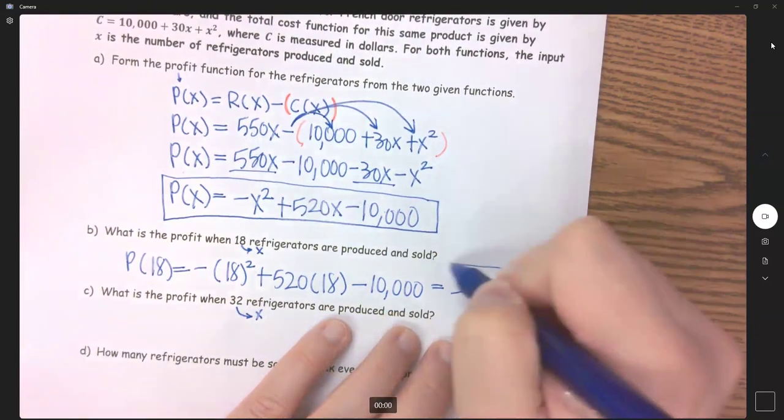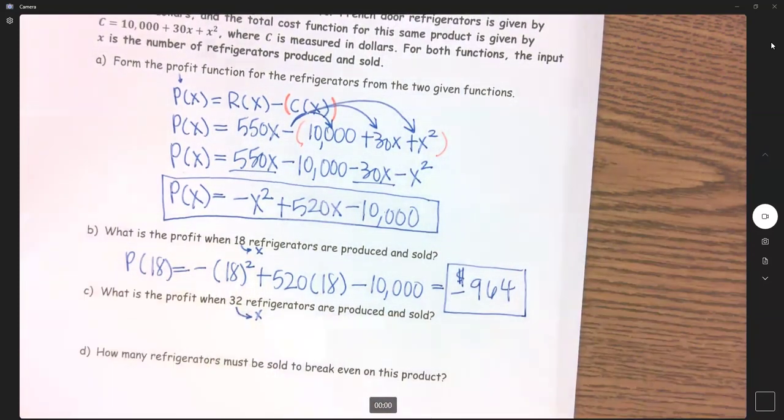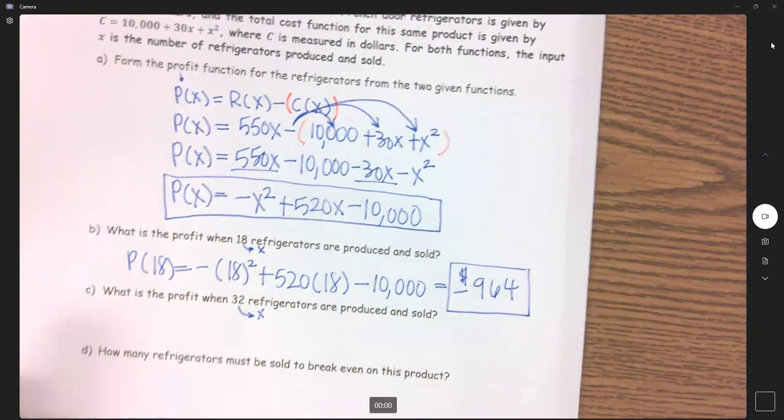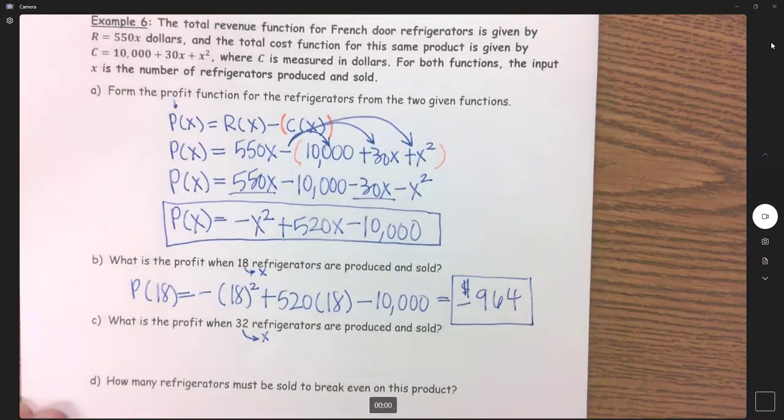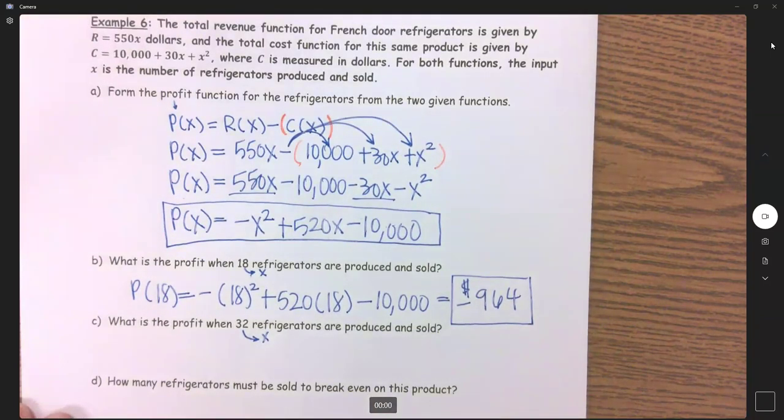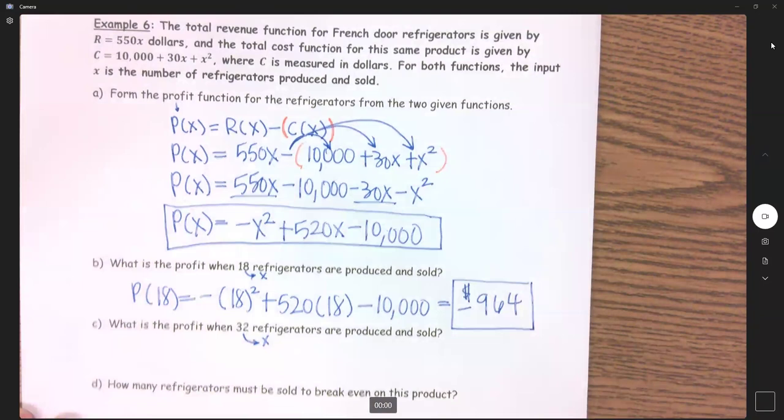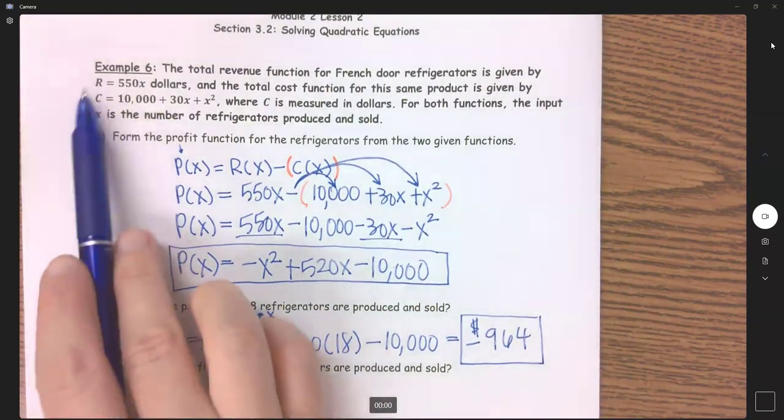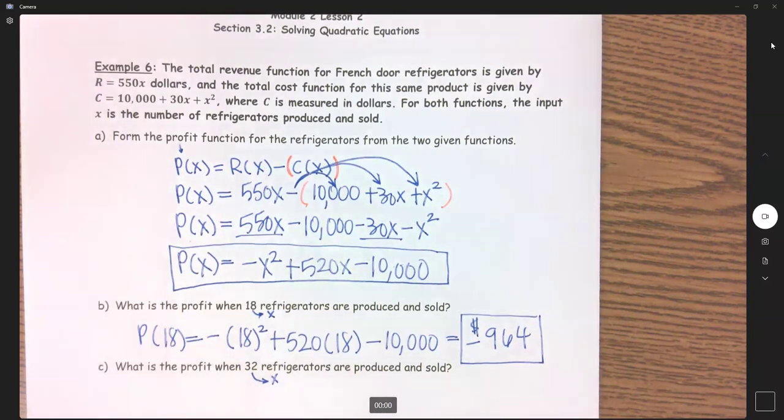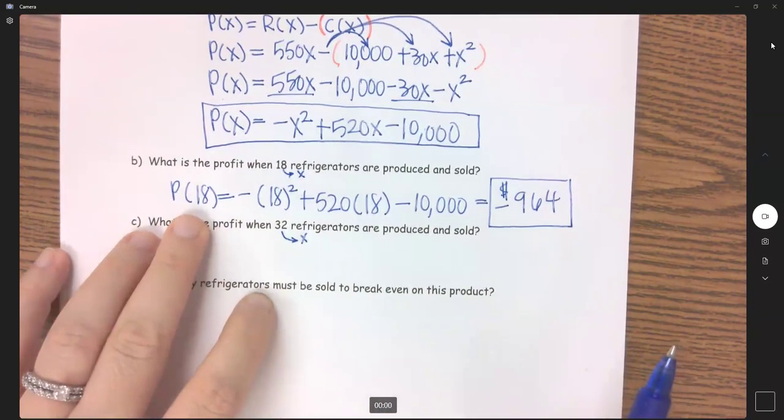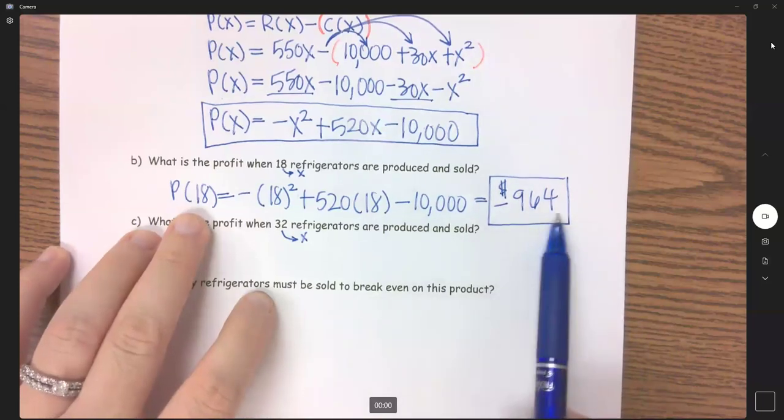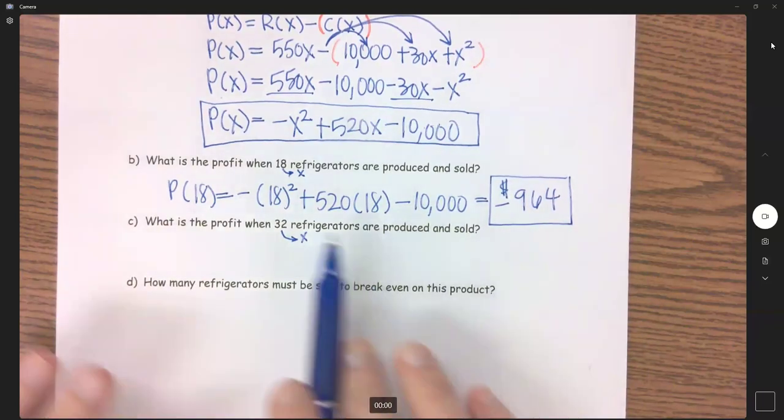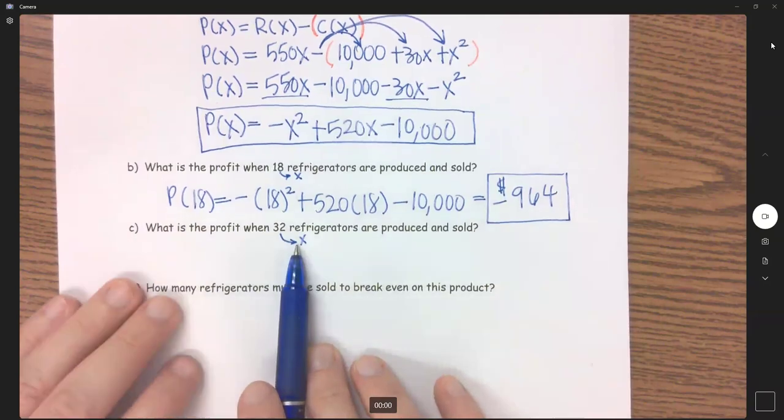If we only sell 18 refrigerators—it doesn't really say what these are for, if these are the revenue and cost functions per week, per month, per year—but if we only sell 18 refrigerators, we're going to be losing almost $1,000. So let's see what happens if I sell 32.